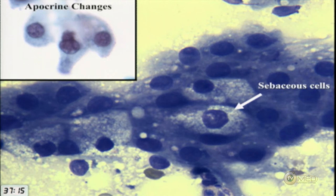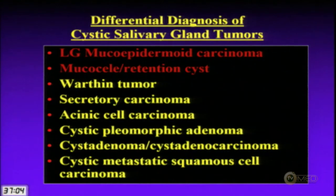The apocrine snouting I mentioned — if I saw that on FNA, I would definitely think about sclerosing polycystic adenosis.